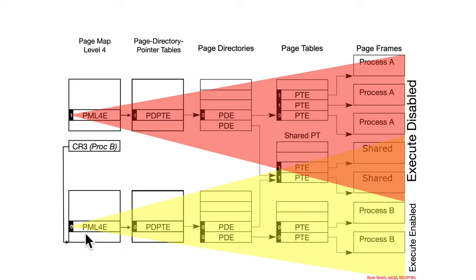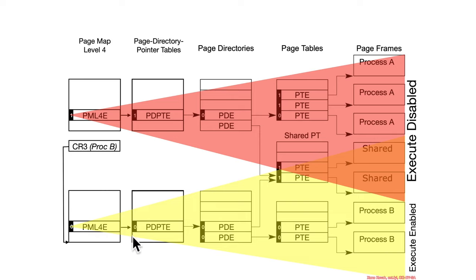When the process switches over to another page table, you might have entries all marked as executable, and so those particular pages could be executable. But even if upper-level entries say executable, when it gets to a lower entry that is marked non-executable, those pages are non-executable when interpreted through that page table.